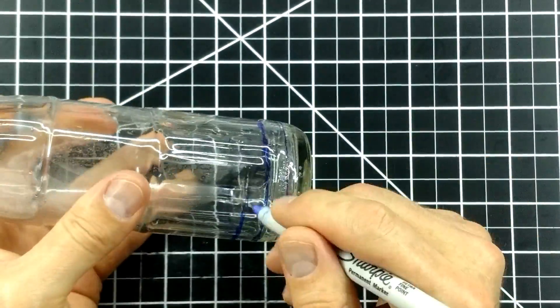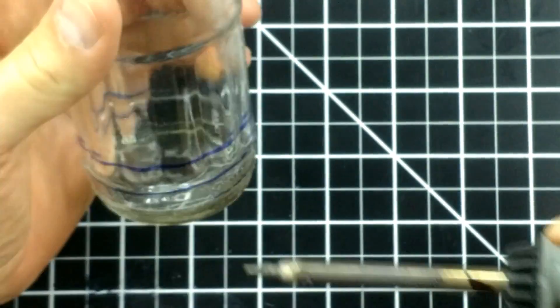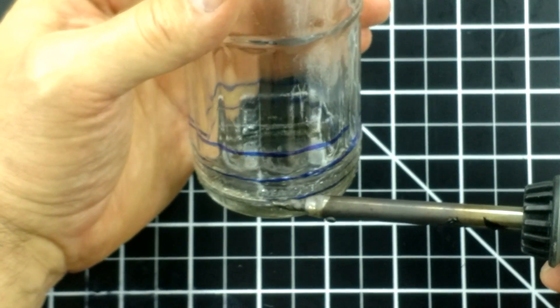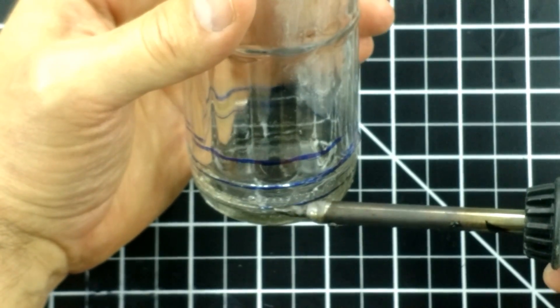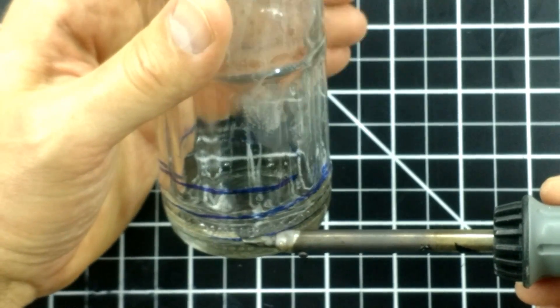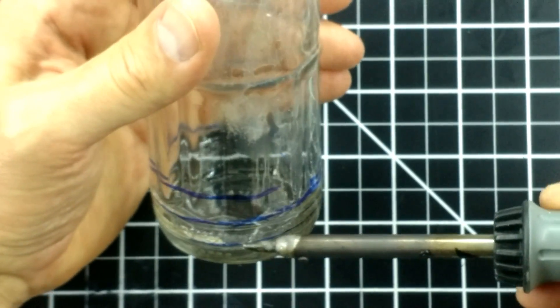Then I happened to come across a video by Dan Rojas. I will have a link for that video in the description below. The first time I tried that technique, it worked. I finally found a way to reliably cut bottles. I experimented with it and tried some modifications, just to see what worked and what didn't work.